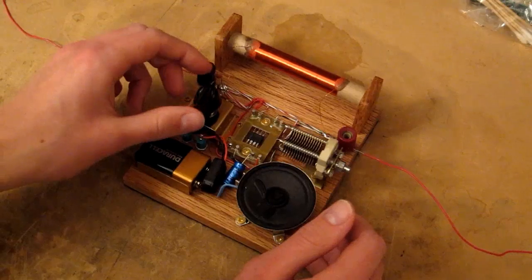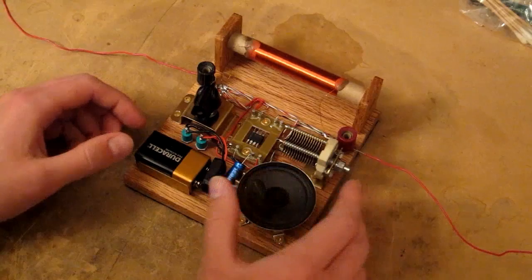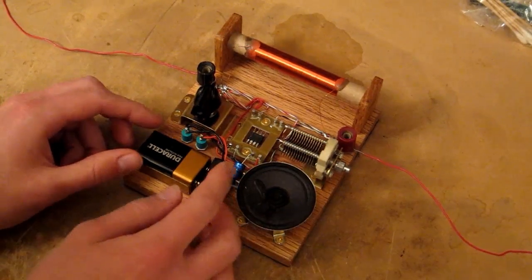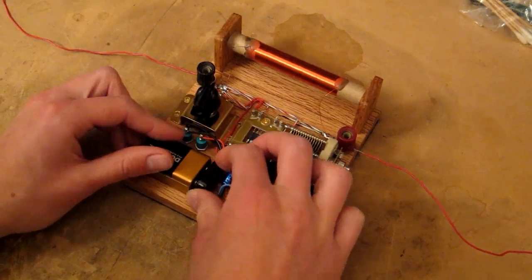Okay, over here we've got the bias control, which is used for the class D modulator biasing. And over here we have the speaker. Okay, let's go ahead and turn this on and see what it sounds like. I've already pre-tuned it, so let's take a look here.